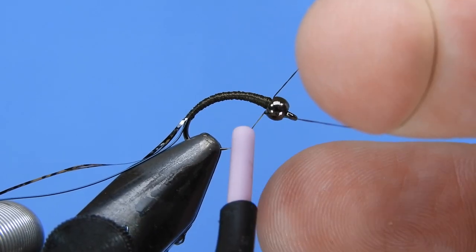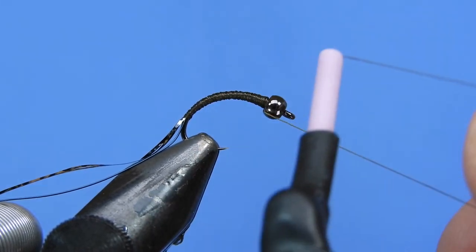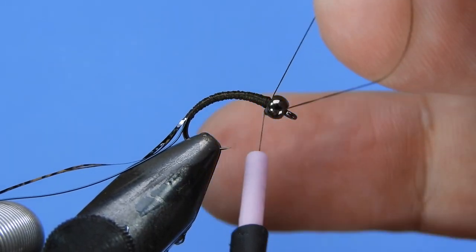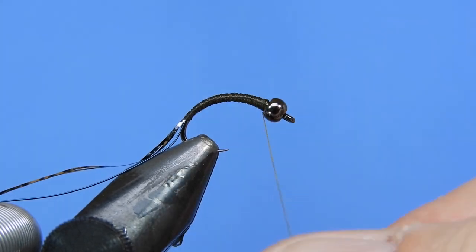Nothing too dramatic, but it gives it a little bit of a taper. If you're using a thicker thread, you'll obviously achieve that a little bit quicker. Just put a half hitch or two just to make sure that that thread doesn't pop off while we're wrapping up our body material.